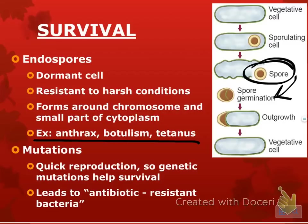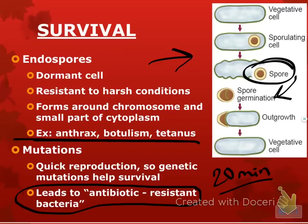Mutations are another way bacteria survive. When bacteria mutate, because they reproduce every 20 minutes, a mutation can take effect very quickly in a population. This is what leads to antibiotic-resistant bacteria. This is why it's important to always take all of your antibiotics — if you don't finish your prescription, the few remaining strong bacteria will repopulate your body and get you sick again.